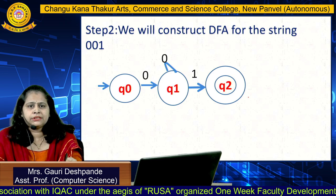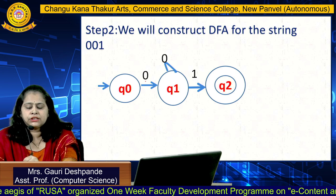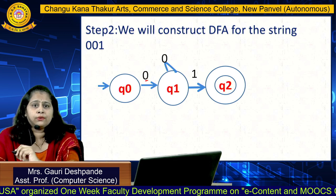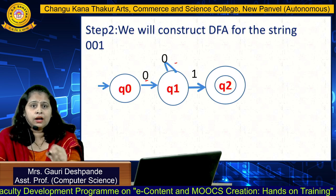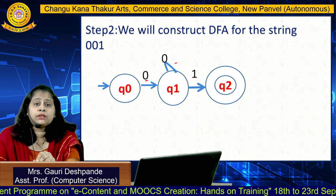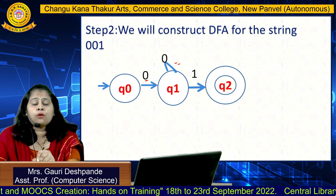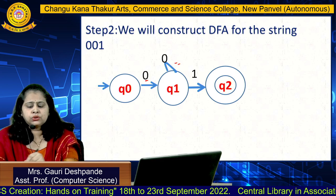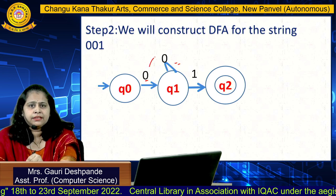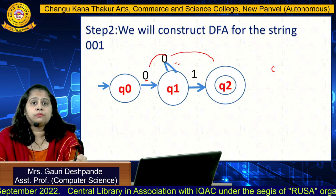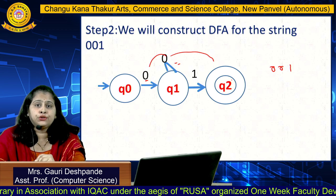Next, construct the DFA for the second string '001'. Again use three states Q0, Q1, and Q2. Write '0' over the arrow from Q0 to Q1. Then Q1 carries '0' via a self-loop back to Q1, and Q1 carries '1' to Q2. The self-loop on Q1 is optional, while the straight arrow is compulsory. So Q2 accepts the string '001'.